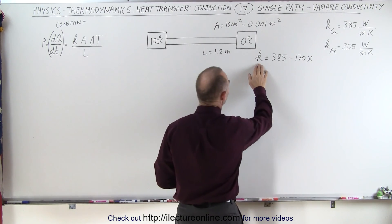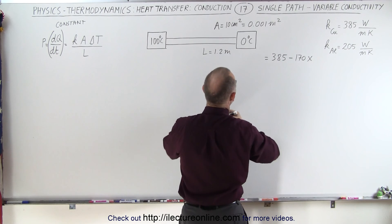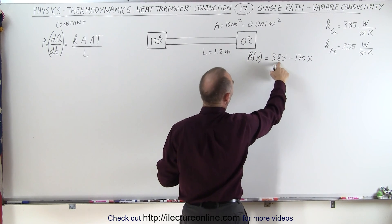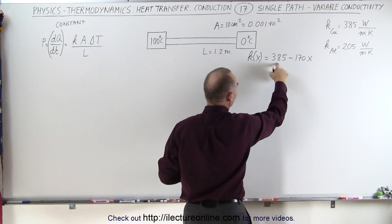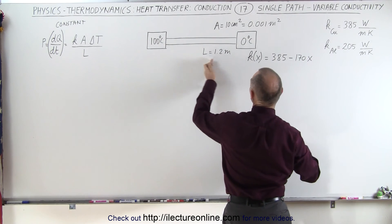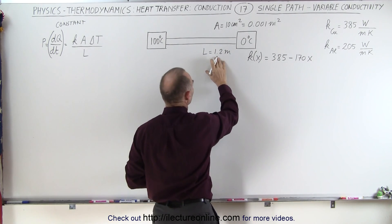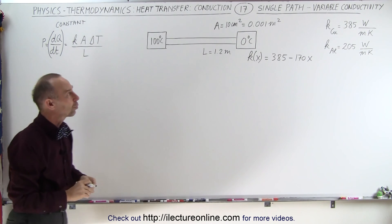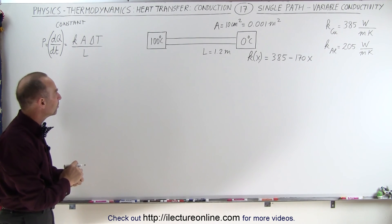The conductivity is going to be a function of x, so we can write this as k is a function of x, and is equal to 385, so it starts out with the heat conductivity of copper, but then it decreases as you're traveling across. Notice the length is 1.2 meters. The cross-sectional area is 10 centimeters squared, which is 0.001 meters squared.